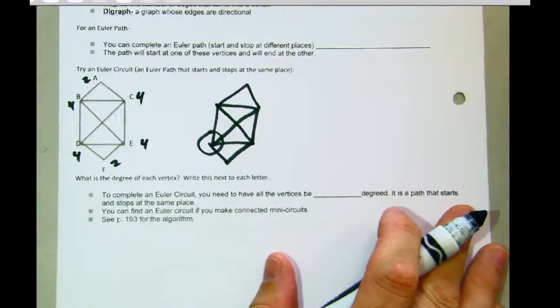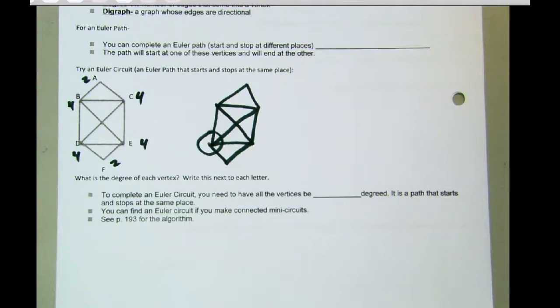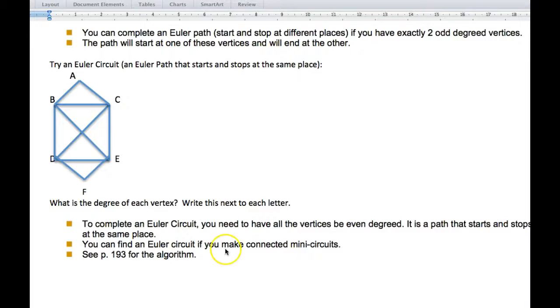So then, what is the degree of each vertex? We did this. So to complete the Euler circuit, all the vertices have to be even degreed. It is a path that starts and stops at the same place. And you can find an Euler circuit if you make connected mini circuits. So this will come up a little bit in your homework, and they'll explain how to do it. But then you can look at page 193 for this algorithm.